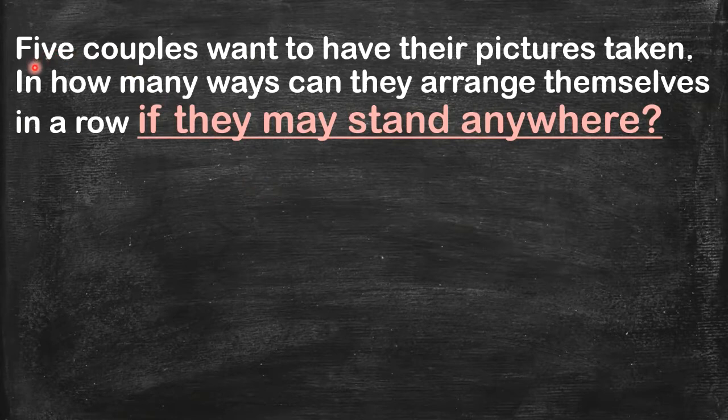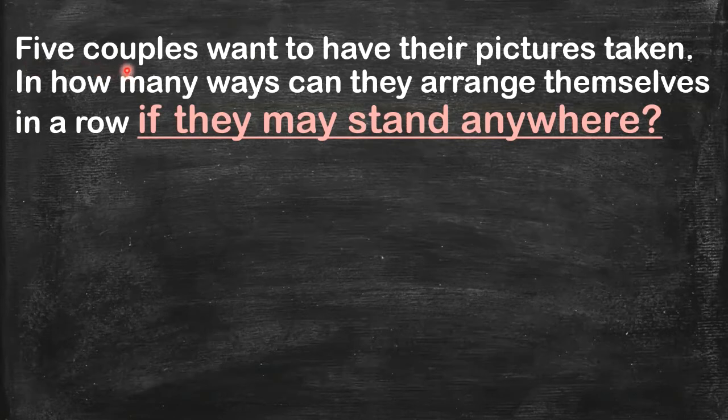But you have to be careful because you might use five. Here we don't have five objects - we have ten objects. One couple has two objects, two persons. So if we have five couples here, we have ten people in all. We're going to arrange ten people in a row.